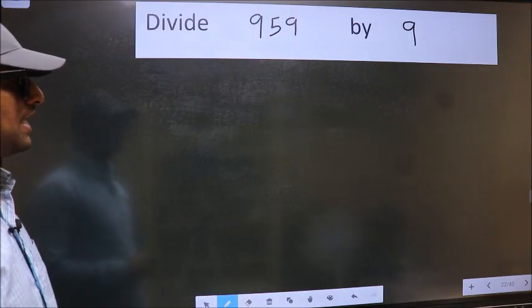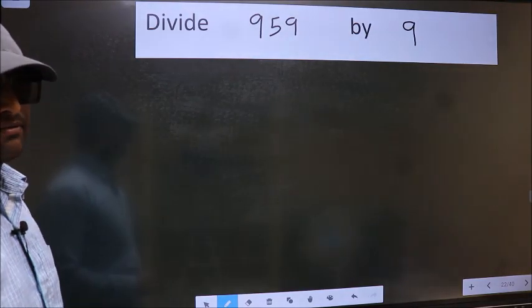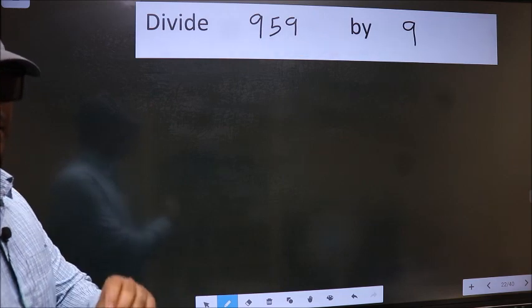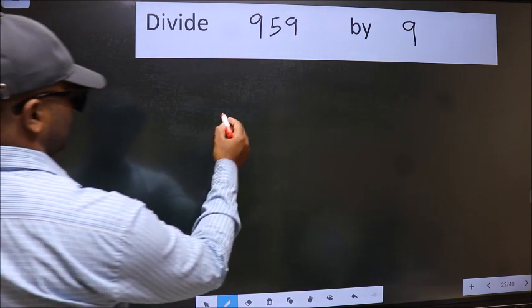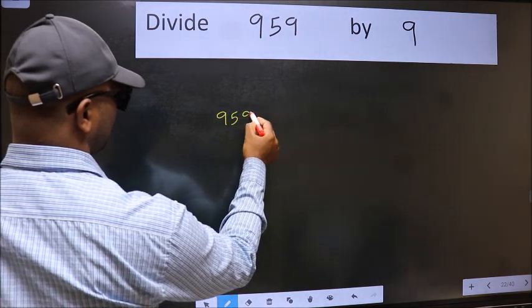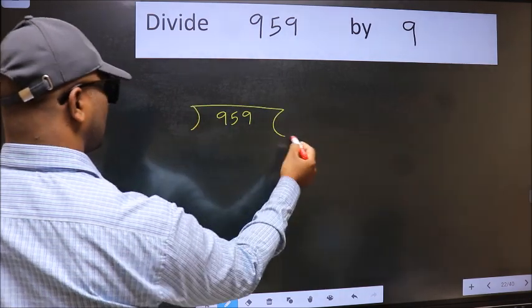Divide 959 by 9. To do this division we should frame it in this way: 959 here and 9 here.